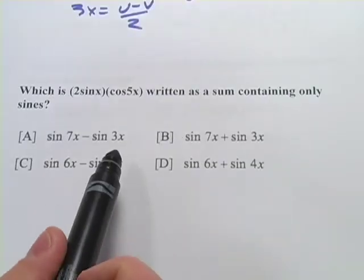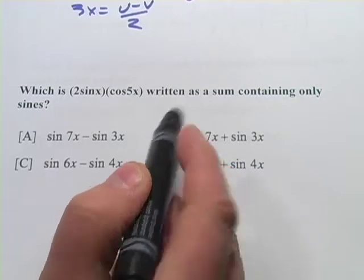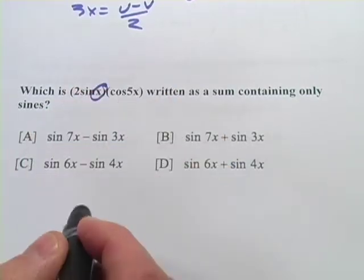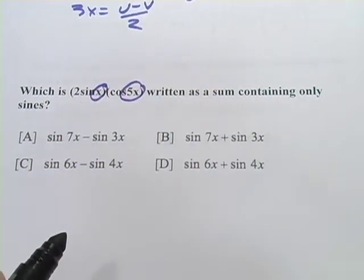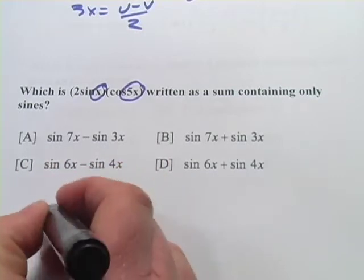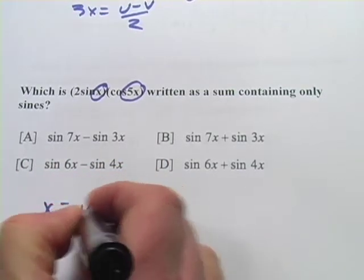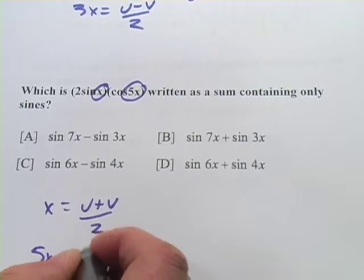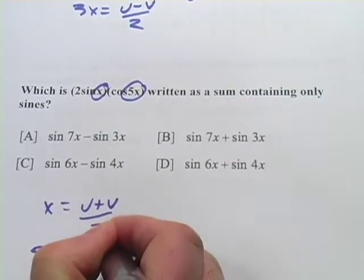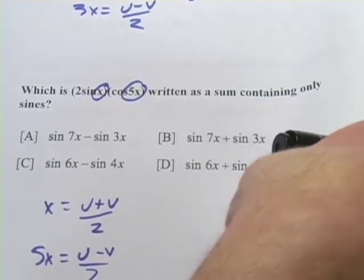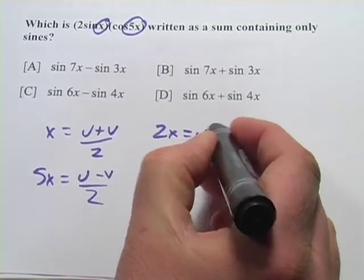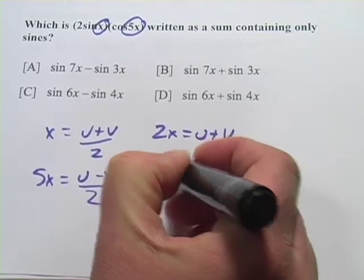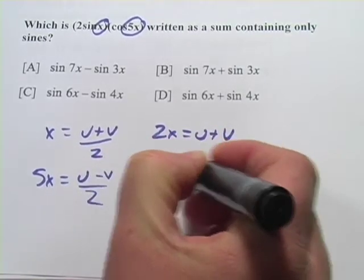So we've got x subbing in for u plus v. And we've got 5x subbing in for u minus v over 2. So x equals u plus v over 2. And 5x equals u minus v over 2. And then we'll simplify there. So 2x equals u plus v. And 10x equals u minus v.